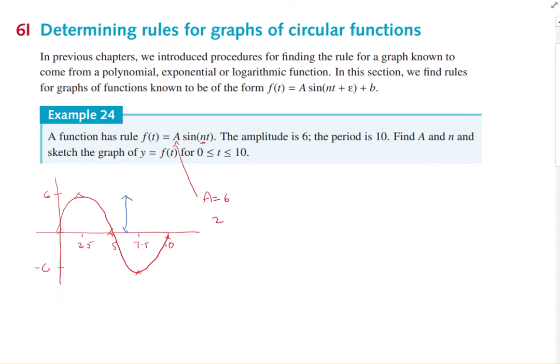So we know that 2 pi on n is equal to the period. In this case, the period is 10. One mistake people make is they put the 10 in for n, but we need to work out what n actually is. So that's 2 pi on n. Transpose, and you get 2 pi on 10 equals n, so swap the 10 and the n. And simplify that and will become pi on 5.